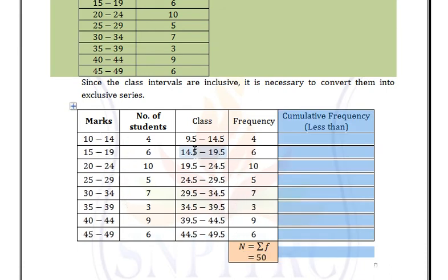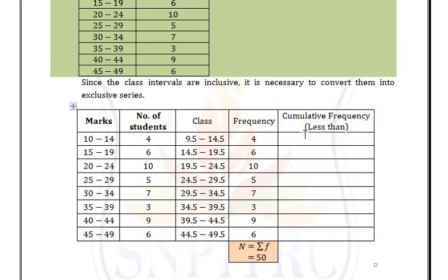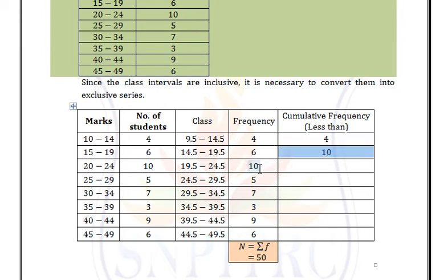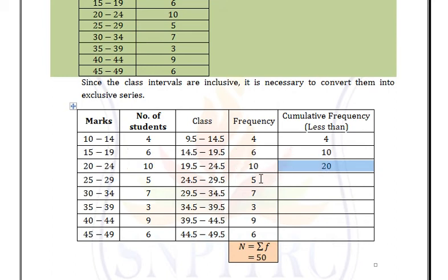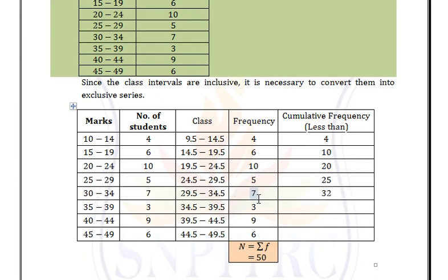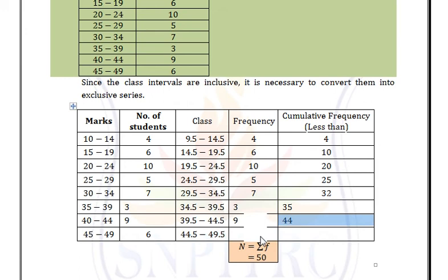In less than form, the first frequency is default: 4. Then 4 + 6 = 10, 10 + 10 = 20, 20 + 5 = 25, 25 + 7 = 32, 32 + 3 = 35, 35 + 9 = 44, and 44 + 6 = 50.